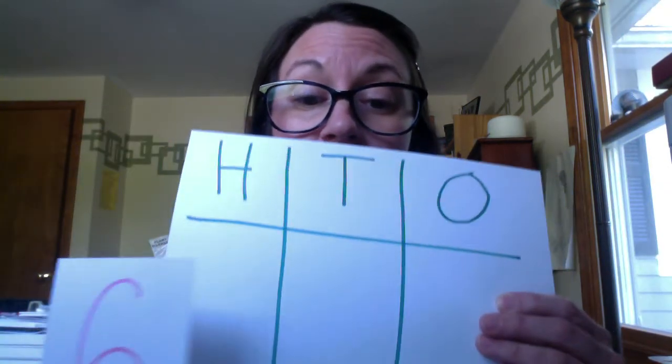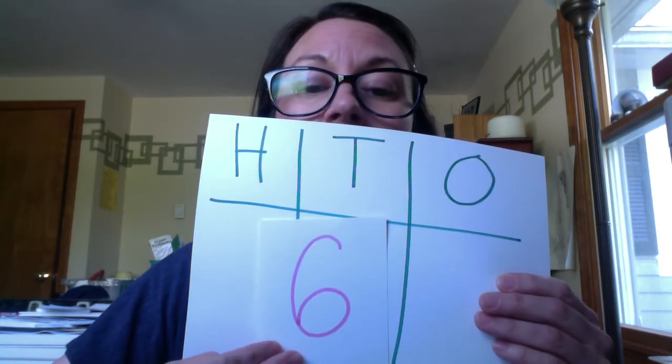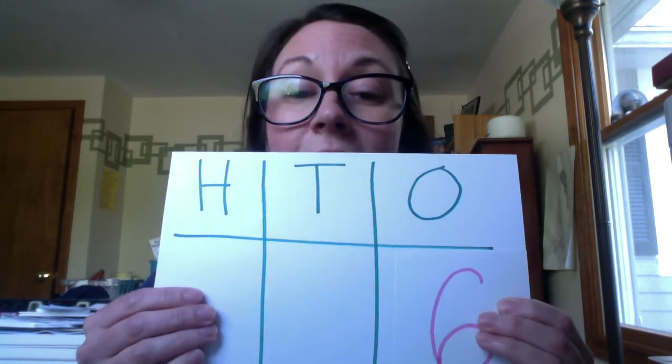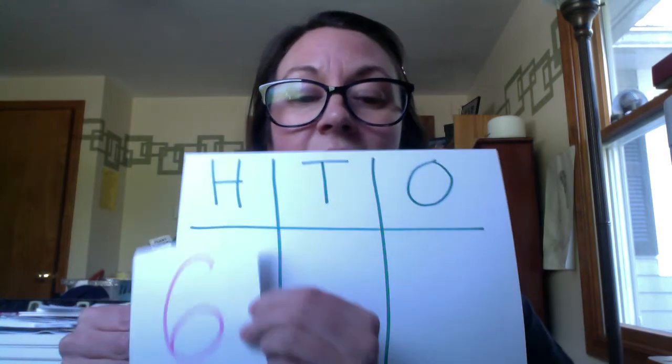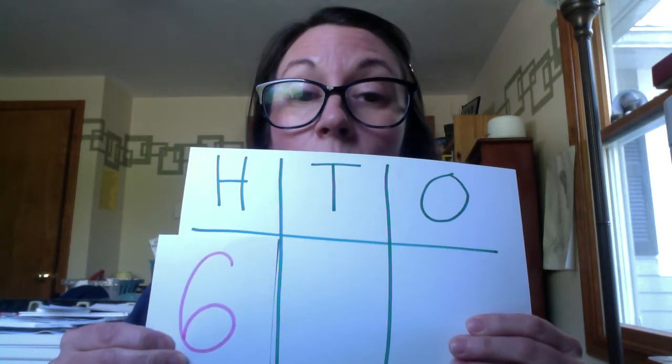Let's review one more time. Place value means that where I place or put a digit gives it its value. I'm going to use my HTO chart. If I put the six in the tens, I have six tens or 60. If I put the six in the ones, I have six ones or six. If I put the six in the hundreds, I have six hundreds or 600. To draw my hundreds, I use squares.